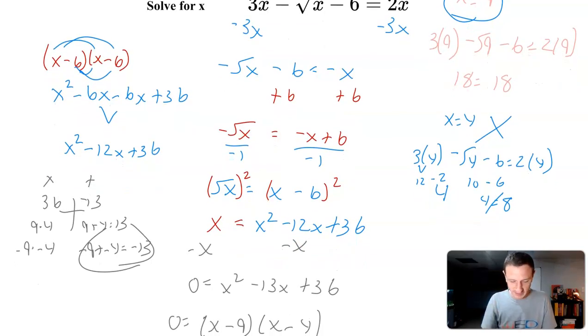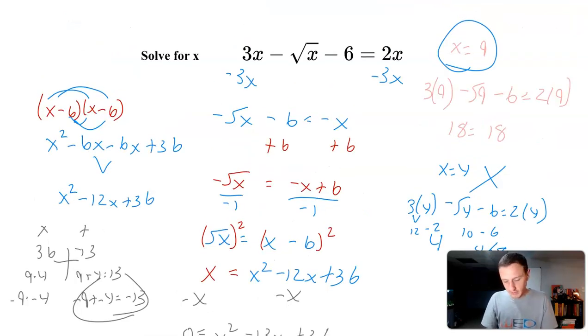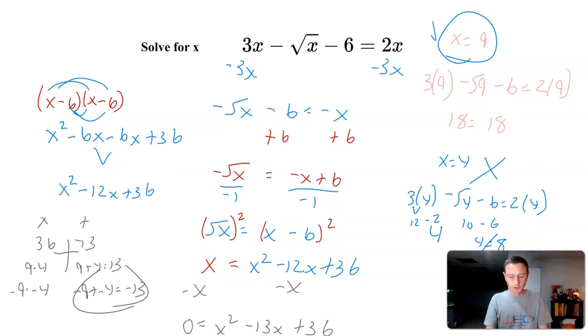One of the solutions doesn't even work. This is why we check. Got to check those answers. I had a feeling when I saw those two numbers I'm like, I don't think both of those are going to work out. Yeah, always double check because only one of them worked in this one. Just to kind of go back to the beginning, that first step, whenever I see this radical, that's usually my go-to strategy: getting this radical by itself.